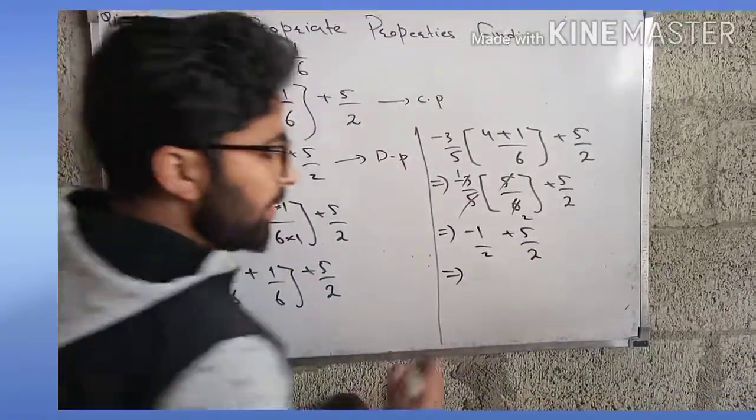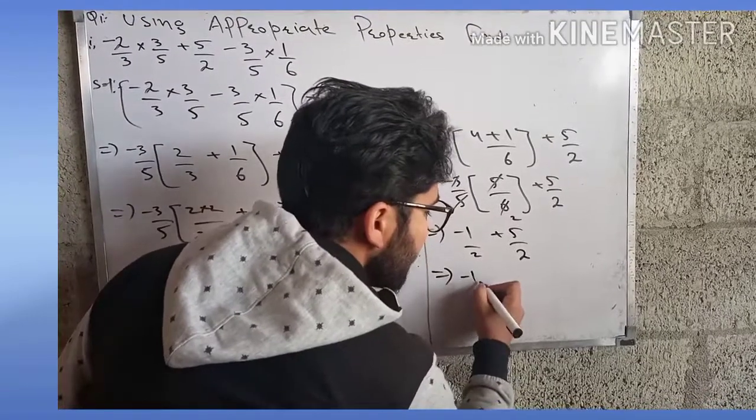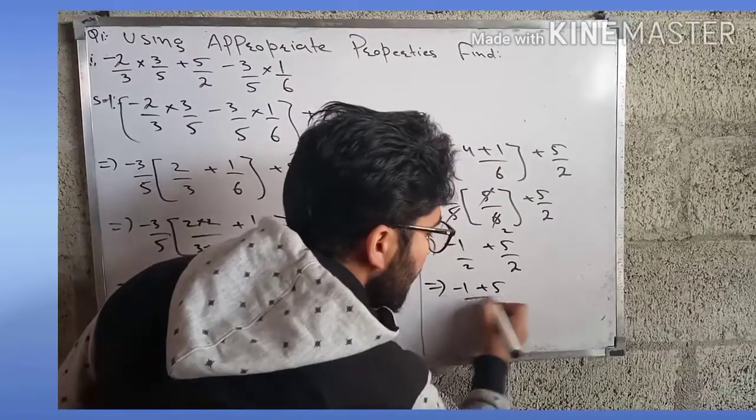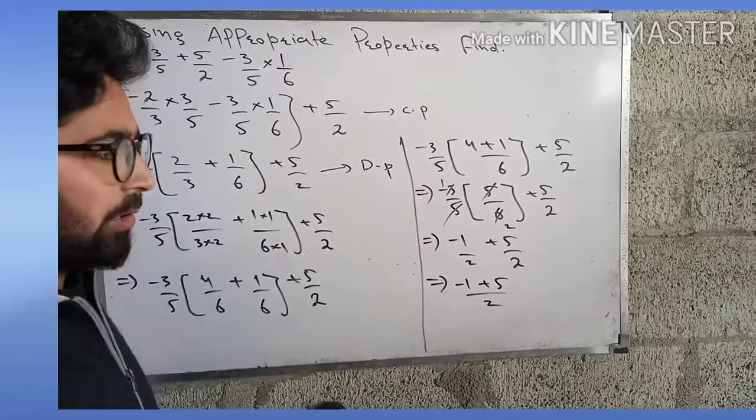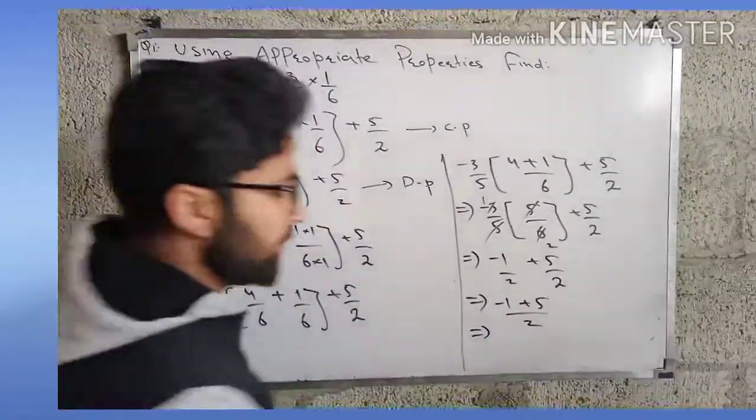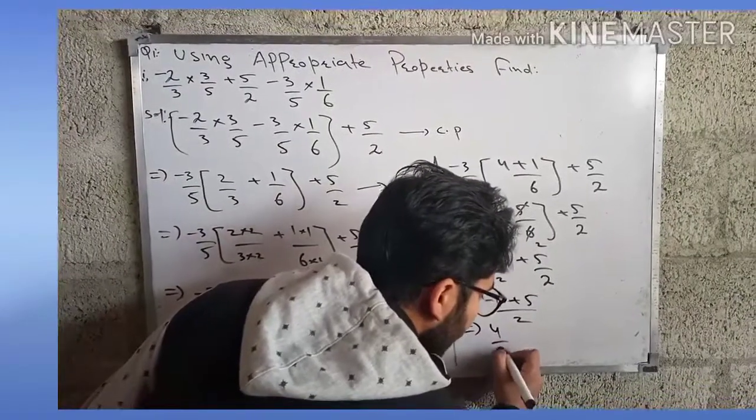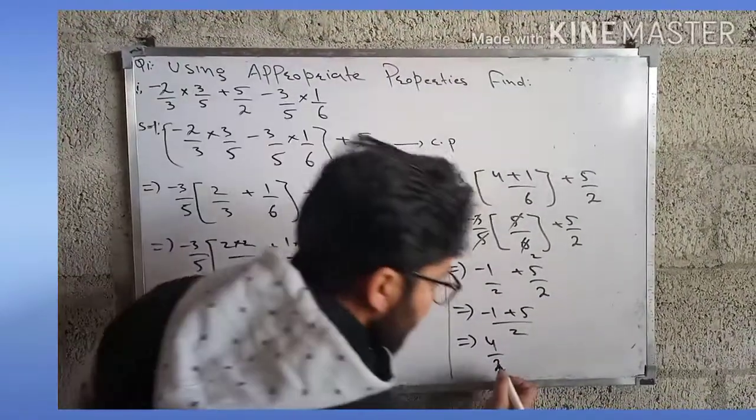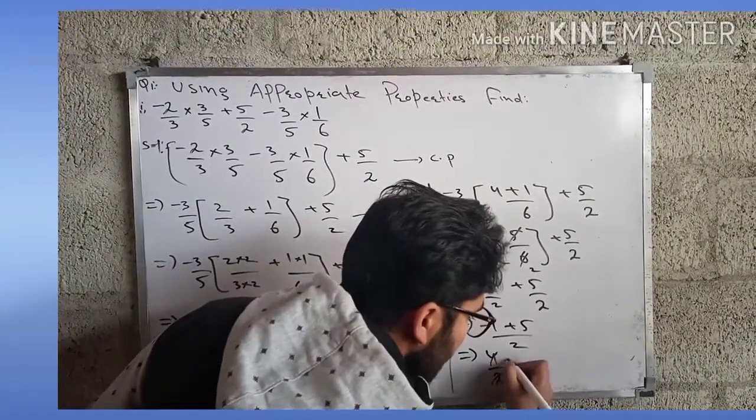Which implies that here the denominator is the same, so we can use the same procedure as -1 + 5 whole divided by 2, which implies that 5 - 1 will be equal to 4/2. In short form, 2 × 1 is 2, 2 × 2 is 4.